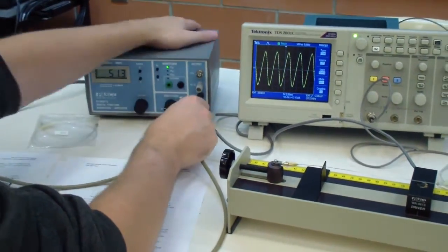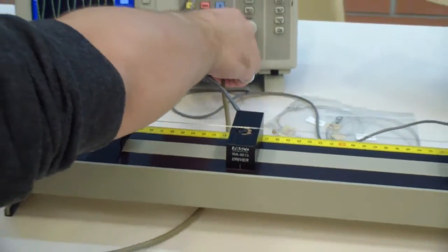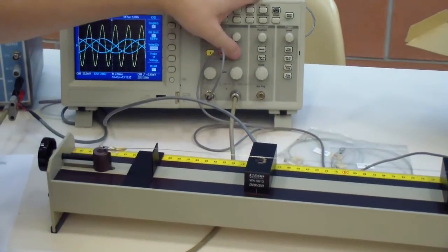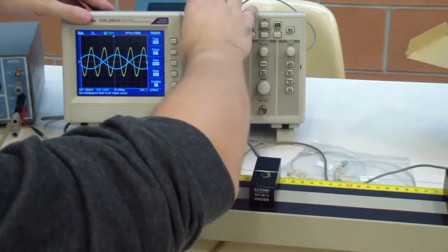Connect the output of the function generator into the second channel of the oscilloscope so that you can see both traces at once, and determine whether the vibrating frequency is the same as the driving frequency or a multiple thereof.